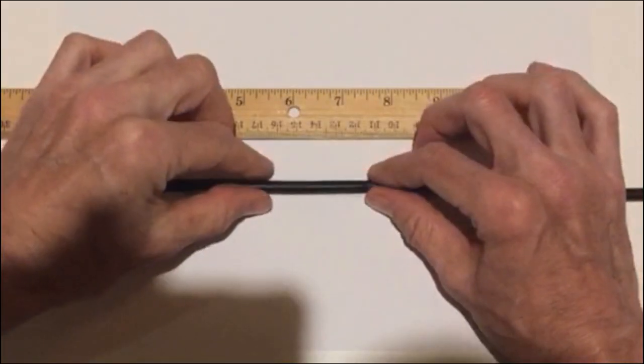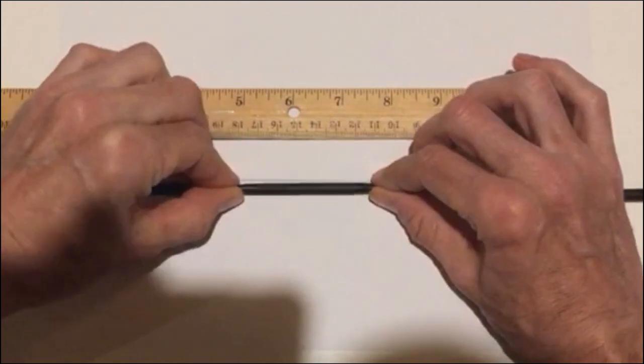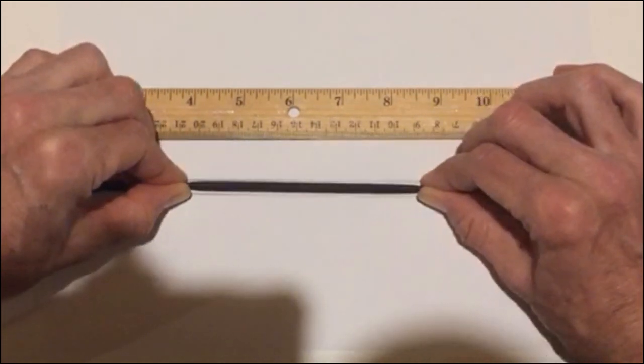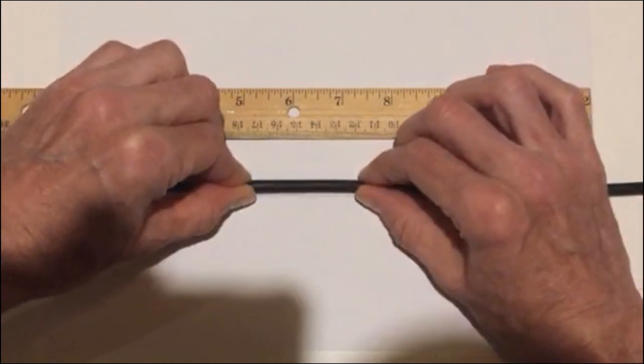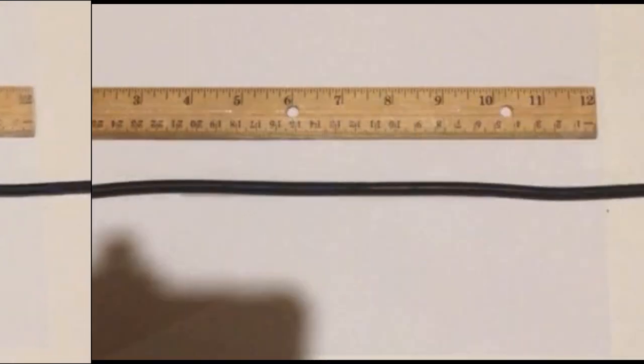When we pull on the rubber cylinder, we can relatively easily elongate it from 5 cm in length to nearly 14 cm. When we release it, the rubber cylinder returns to its original length.